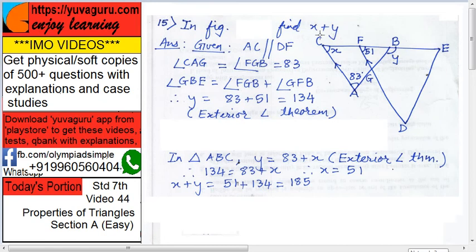In triangle ABC, this y equals to x plus 83 by the exterior angle theorem. Now what is the exterior angle theorem?